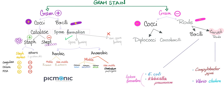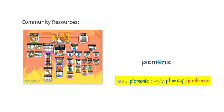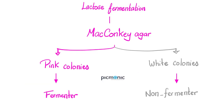The curved rods we'll discuss today include Campylobacter jejuni and Vibrio cholerae. The non-curved gram-negative rods include Escherichia coli and Klebsiella pneumoniae, both of which are lactose fermenters. If bacteria ferment lactose, they appear as pink colonies on MacConkey agar; if they do not ferment lactose, they appear as white colonies on MacConkey.